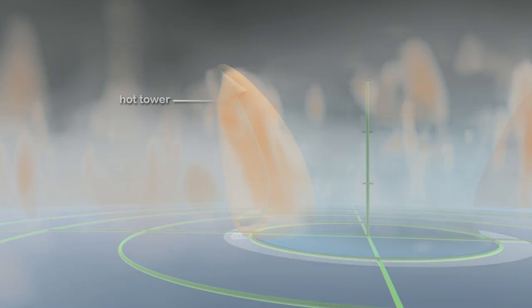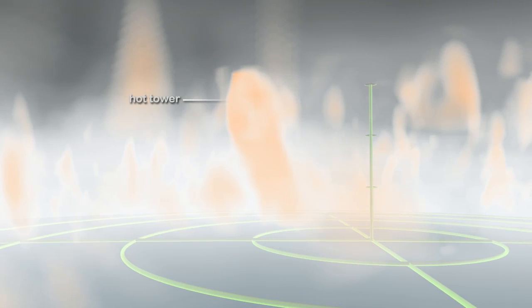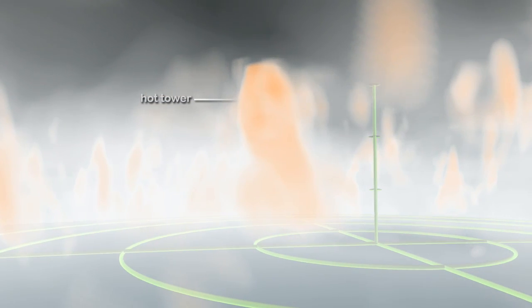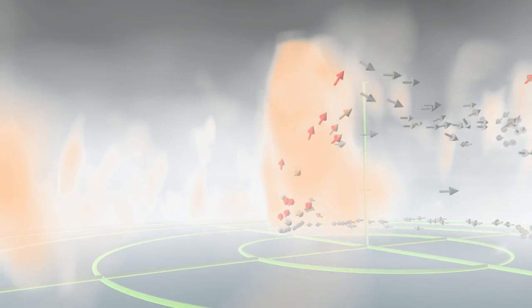High-resolution computer simulations of hurricanes show the formation of hot towers. In this simulation of Hurricane Bonnie, hot towers are clearly visible. The arrows show winds swirling near the surface where energy is picked up from the warm ocean. Some of this air moves into the hot tower and rises rapidly, boosting the hurricane's strength.